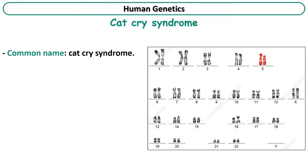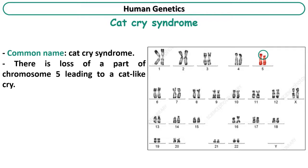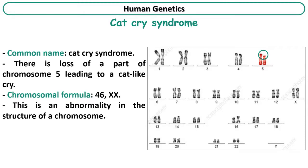Now, concerning cat cry syndrome, if we examine the karyotype, we find that one of chromosomes 5 is shorter than the other, which means there is a loss of a part of chromosome 5, leading to a cat-like cry in newborns. If we count the chromosomes, we find 46. So the chromosomal formula is 46XX in this case, and this is an abnormality in the structure of chromosomes, not in their number.